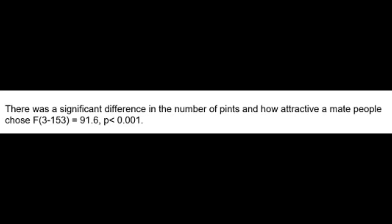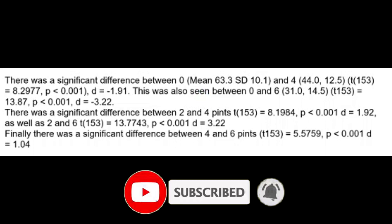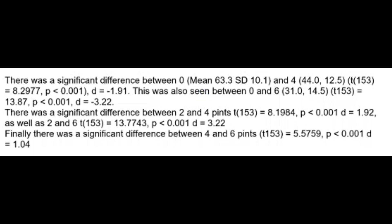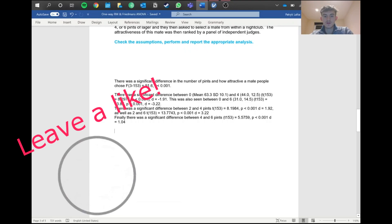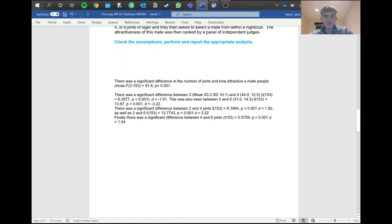When reporting, first state there was a significant difference in how attractive a mate people chose based on number of pints — citing the F-statistic, degrees of freedom, and p-value. Then compare each significant group pair: report the mean and standard deviation for both groups (since this is a parametric test), the t-value, p-value, and effect size d. Cohen's d is calculated as the mean of the experimental condition minus the mean of the zero-pints condition, divided by the standard deviation of the zero-pints condition. Repeat this for every significant pairwise comparison in the table.